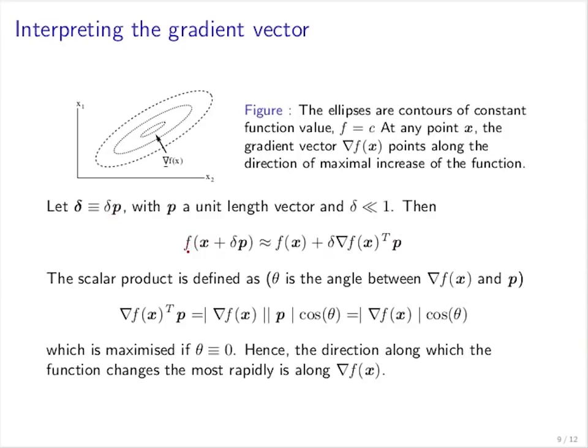So f at position x plus some small amount in direction p is approximately, right, you see that I'm leaving out the second order terms here, the value of f at position x plus the scalar product here. So what we are interested in now is to find out in which direction p do I need to go such that this actually becomes as maximal as possible.